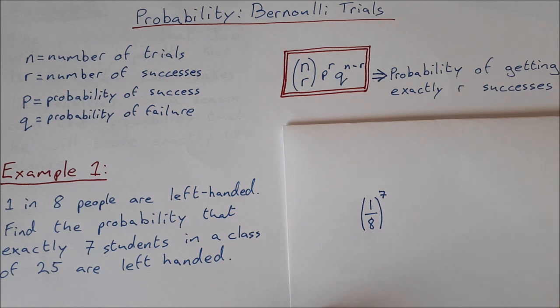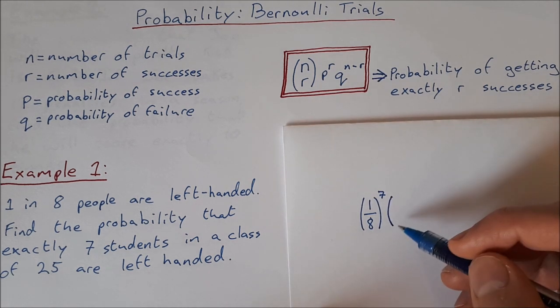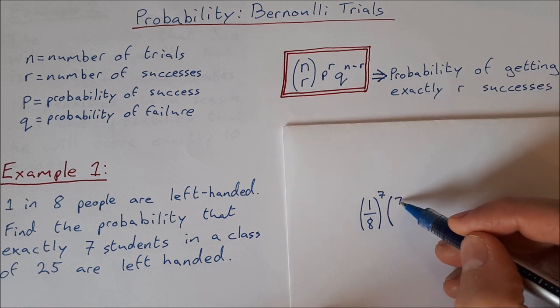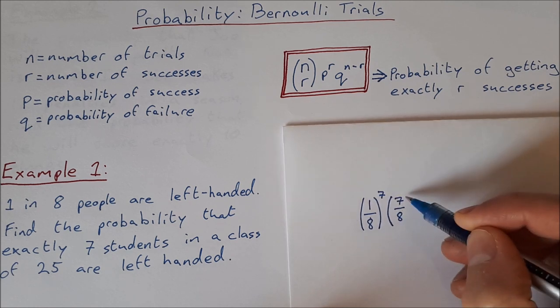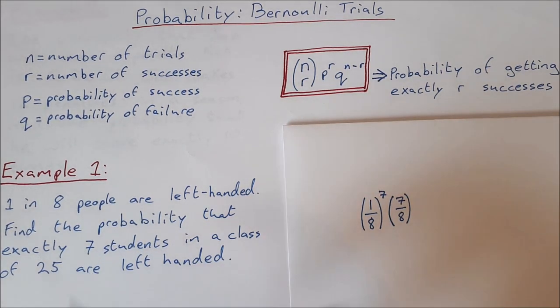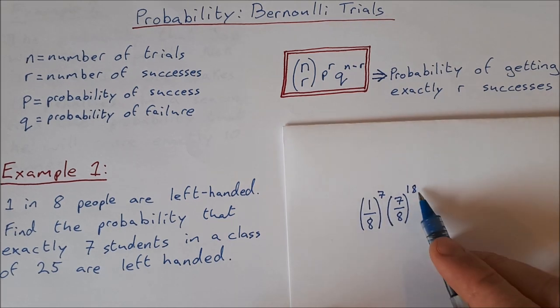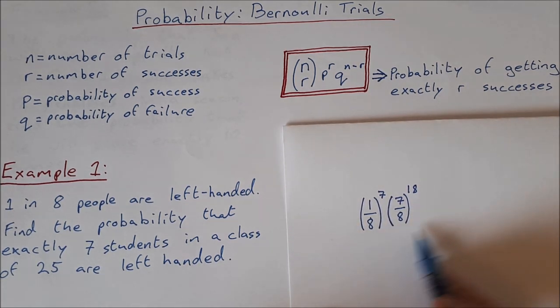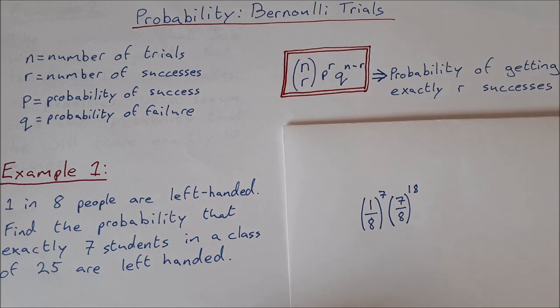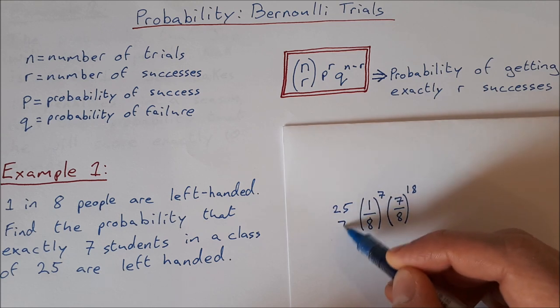Then I want the rest of the students to be right-handed. So what's the probability of being right-handed? Well, it's seven over eight. How many students do I want to be right-handed? 25 take seven is 18. 18 students are going to be right-handed. Now, how many ways can this happen? Well, this can happen 25 choose seven ways.